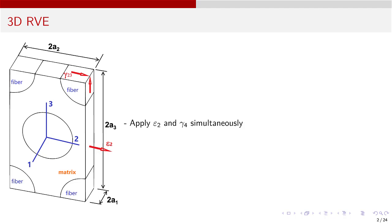The average stress can be used in a local-global analysis. We calculate everything exactly at the local level, then we pass the average stresses back to the global macro level. Here we are applying an in-plane strain epsilon 2 — see the red arrow along the two direction — and shear strain gamma 23, also in red.